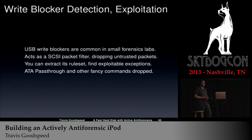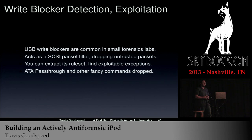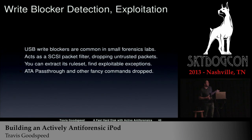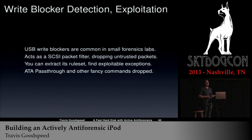USB write blockers are rather common in smaller forensics labs. They act as a SCSI packet filter, dropping untrusted packets. You can extract their rule set and then find exploitable exceptions — ATA pass-through is allowed by some of them, which allows you to switch to ATA and have at it. Or, if you know that your host by fingerprinting should be speaking ATA but it's not — like a Linux host that's not asking to switch to ATA — that tells you there's a write blocker in the way, not just that the host hasn't decided to write yet.